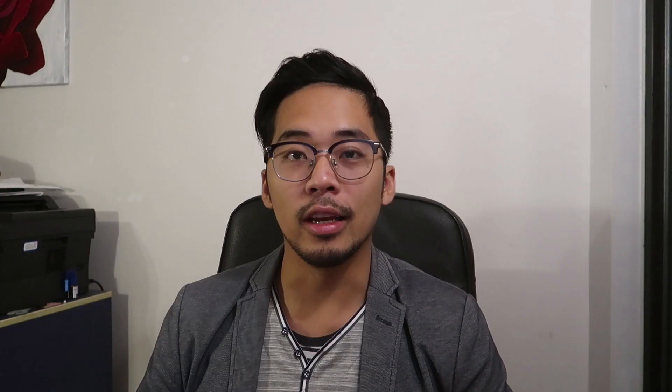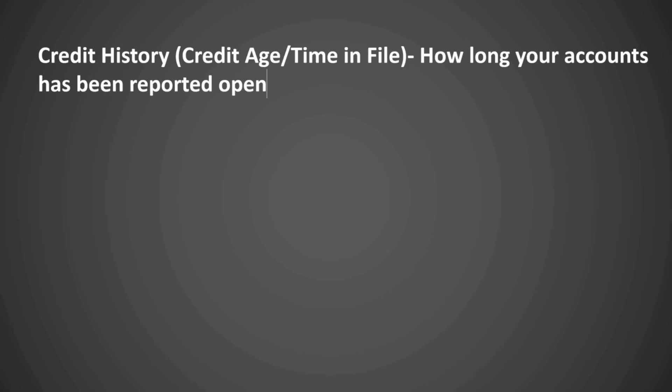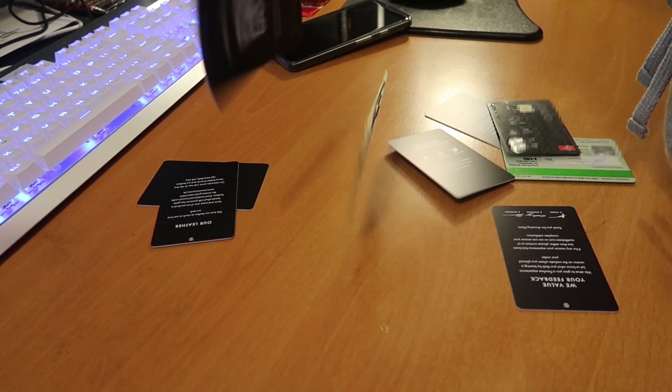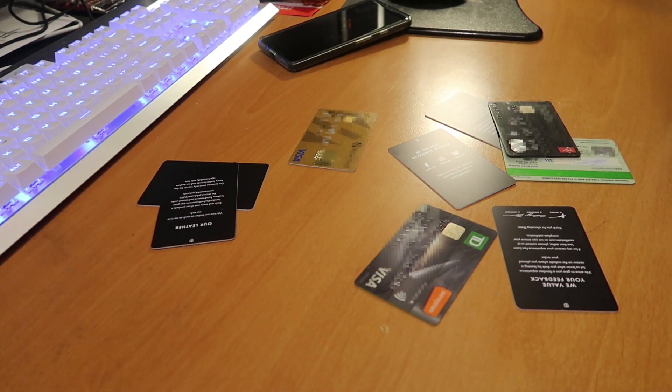Credit history, also known as credit age or time in file, is basically how long your account has been reported open. Any account that's in good standing and has been reported open for a long period of time generally has positive impacts on your credit rating. The average age of all your credit products combined makes up your credit history. This is important to lenders because a long track record without any issues is usually an indicator of similar behavior in the future. On the flip side, if you're the type of person who applies for many credit cards and closes them a year later, then there will be negative effects on your rating. Credit history makes up around 15% of your credit score.